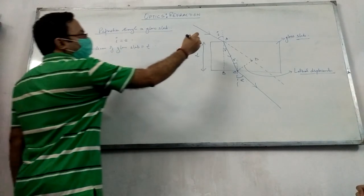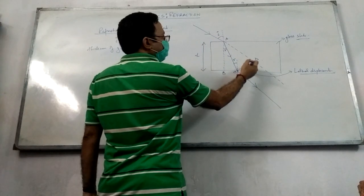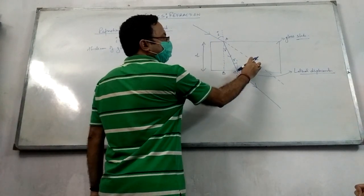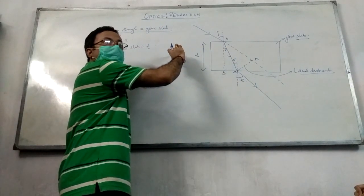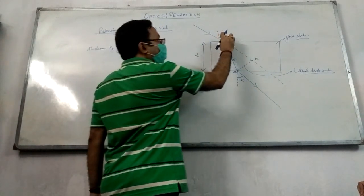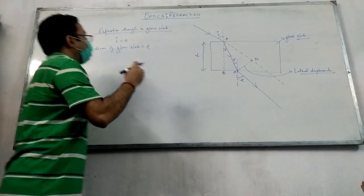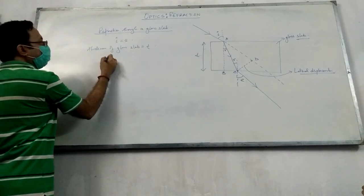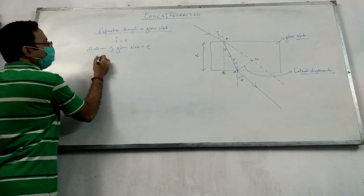Now, tell me, what do we need to find? This is the lateral displacement CD in terms of T. CD in terms of T? So, CD - which triangle belongs to CD? ACD. ACD, right. In triangle ACD.